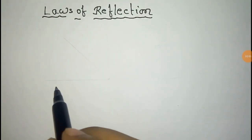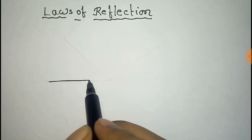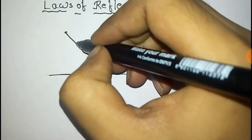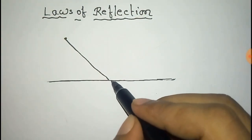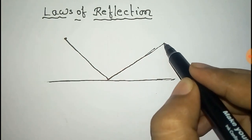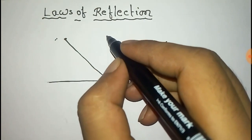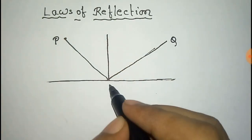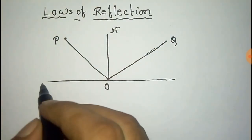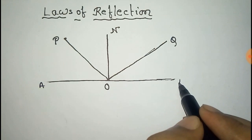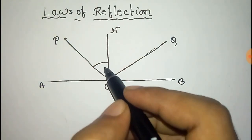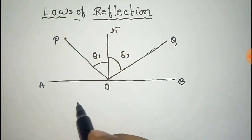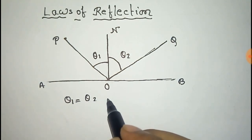We have to prove the law of reflection from Fermat's principle. For this purpose, we first take a reflecting surface and a light from the source coming in one direction, and after reflecting off the surface it goes to another direction. This is the normal to the surface. We take the source point as P, the endpoint as Q, this point as O, and label this as N, A, and B. The angle of the incident light to the normal is theta 1 and the reflected light to the normal is theta 2.